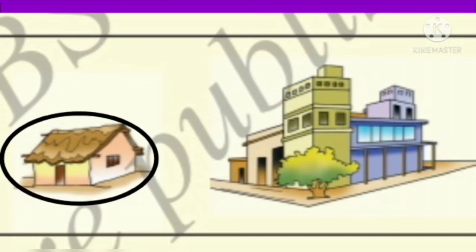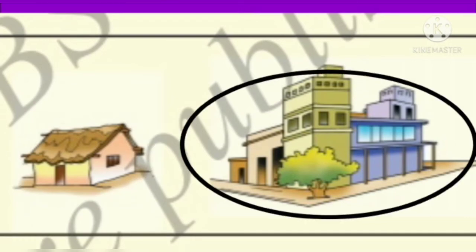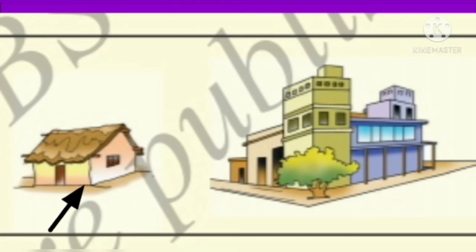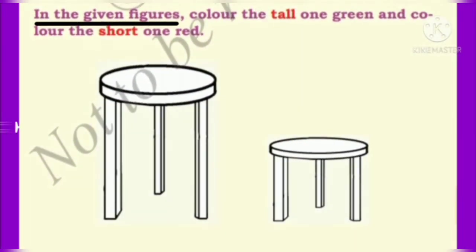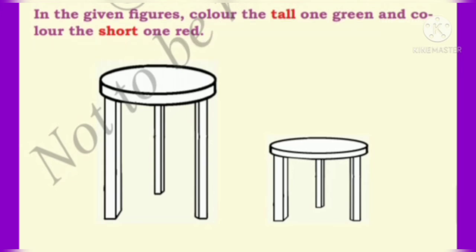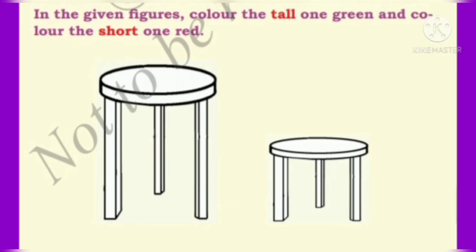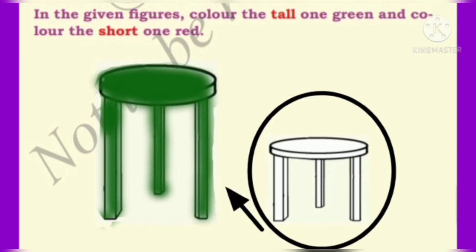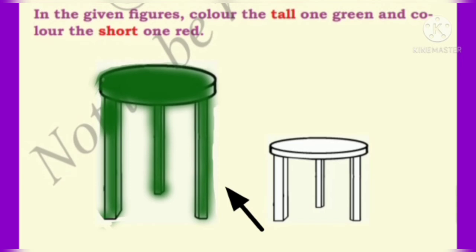Observe this picture. Next, we have hut and building. Which one is short? Hut is shorter than a building, so let us put a tick mark for the hut. Next, in the given figures, colour the tall one green and colour the short one red. Here we have two stools. Which one is tall? This one is tall, so let us put green colour for this stool. This stool is shorter, so let us put red colour for this stool.